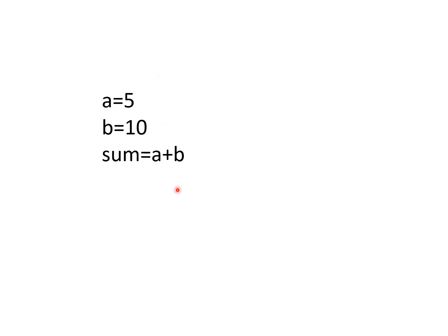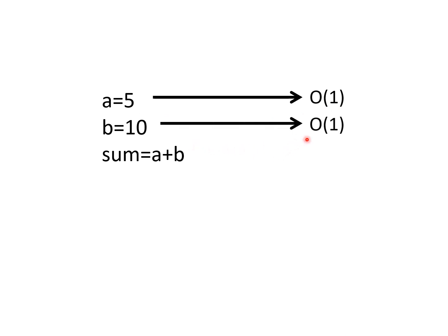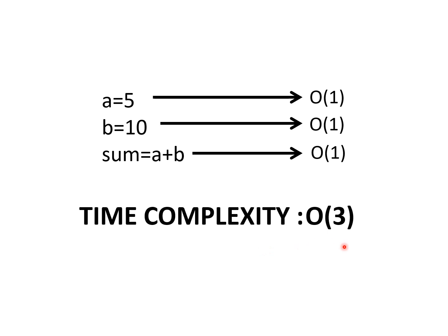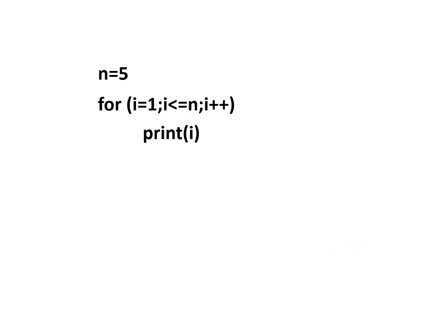Consider this program. It has three operations. The time taken by the first operation is O(1), the second is also O(1), and the third is also O(1). So the time complexity is O(3). But even if you change the values, the time complexity remains constant, so it is generally termed O(1).